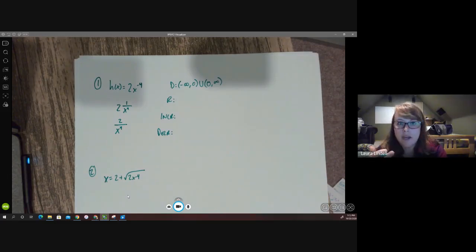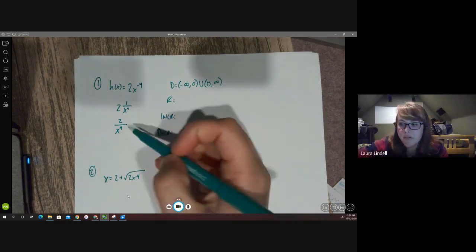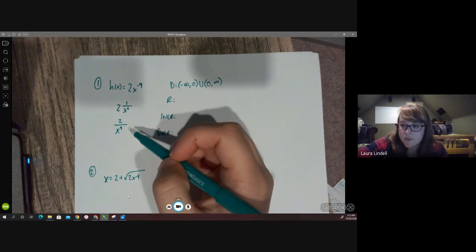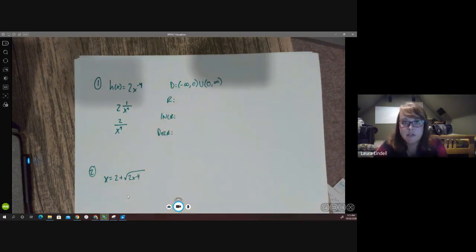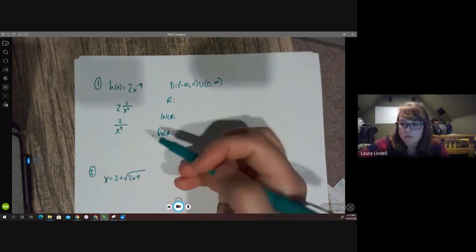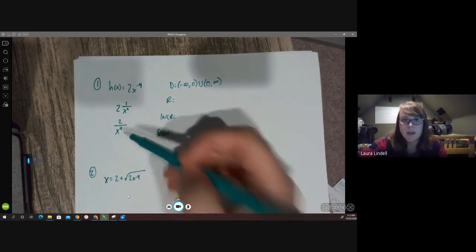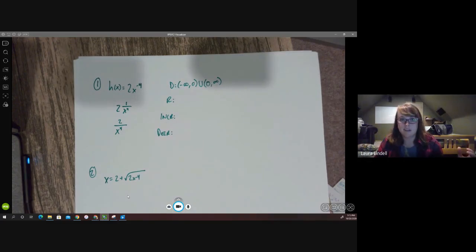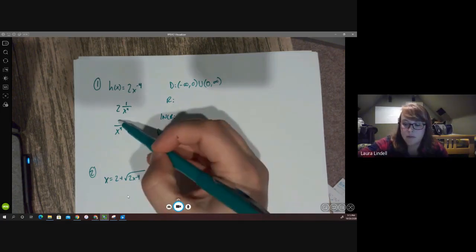And then likewise for the range, we could also think about it in a similar fashion just by looking at the equation. x to the fourth, is that ever going to be a negative number? No. So since that's the case, we're not going to have any negative values of y. Our function is never, the h of x is never going to be less than zero. Is it ever going to be zero even? Well, no, because we have two over something. And as that x value gets bigger and bigger and bigger, it gets closer and closer to zero. But it never actually quite reaches the zero, because we still have this two on the top.